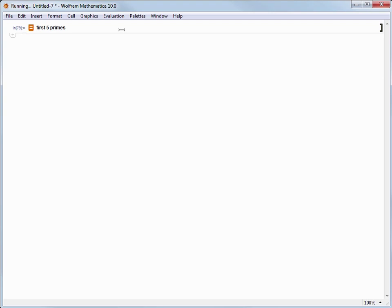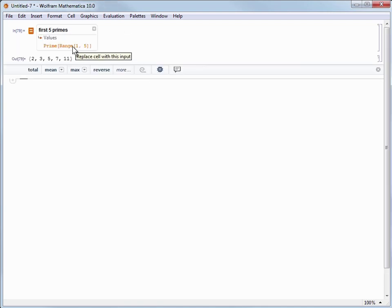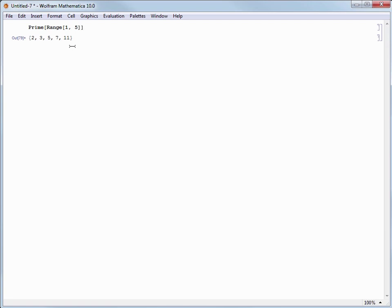Now when we get that list of results back, we can click the Wolfram language code to discard that freeform input. Let's go ahead and edit the command to get the first 25 primes by changing the 5 to a 25 and then reevaluating.